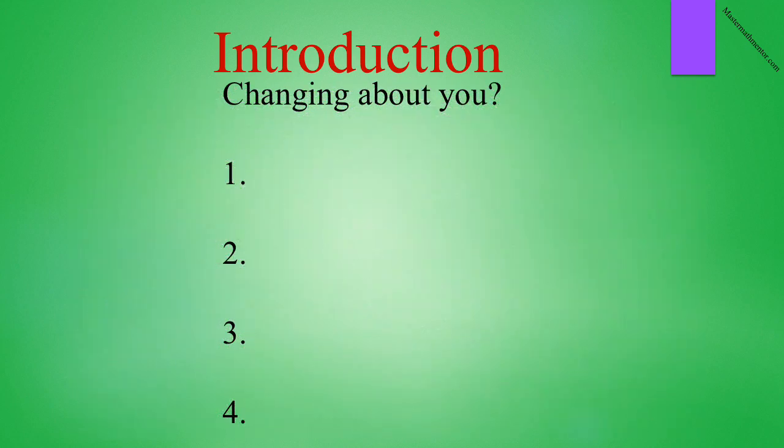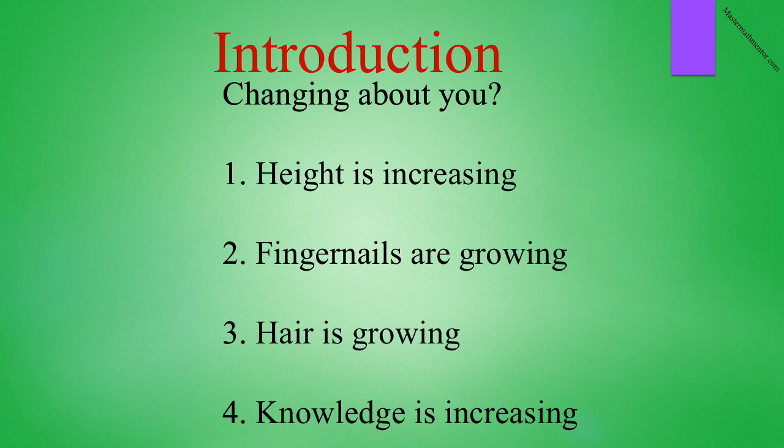At this point, stop the video and on page 2, write down four things that are changing about you at this moment in time. Here are four possible ones. Your height is increasing. Your fingernails are growing. Your hair is growing. And your knowledge is increasing. Notice that all of these are positive changes. As you get older, you may find that some will decrease. Older people usually get shorter. And certainly, the hair starts to fall out.